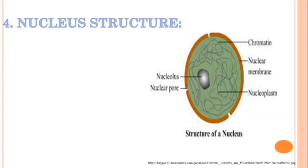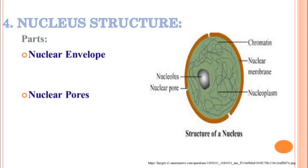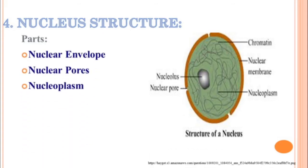Now let me explain about the nucleus structure. You can see the parts of the nucleus: nuclear envelope, nuclear pores, nucleoplasm, nucleolus, and chromatin. These are the important structures present, and they perform a variety of roles for controlling all cellular activities.